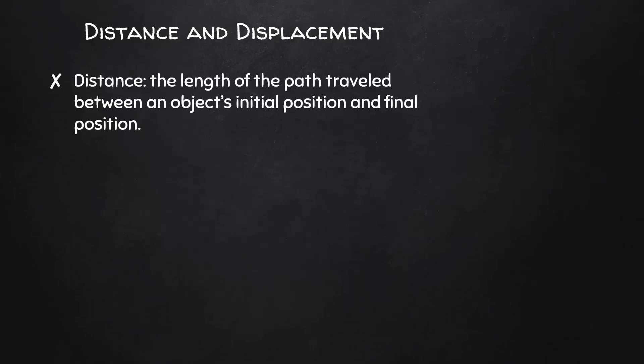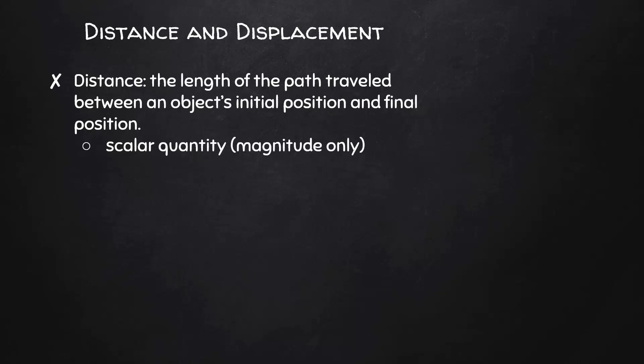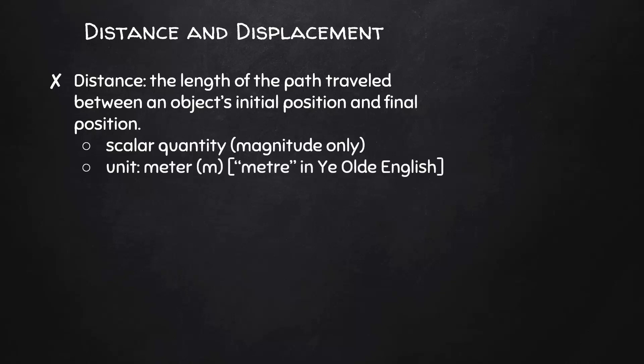Distance is the length of the path traveled between an object's initial position and final position. It's a scalar quantity, which means it has magnitude only. The unit for distance is the meter — you'll see it spelled with an R-E in IB documentation.